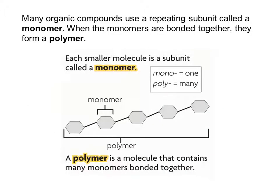Our biomolecules have similar structures because a lot of organic compounds use repeating subunits called monomers. Monomer means one unit because mono means one. These monomers are repeated over and over and bonded together with covalent bonds to form a polymer. Poly means many — the picture here shows that five monomers bonded together make a polymer.